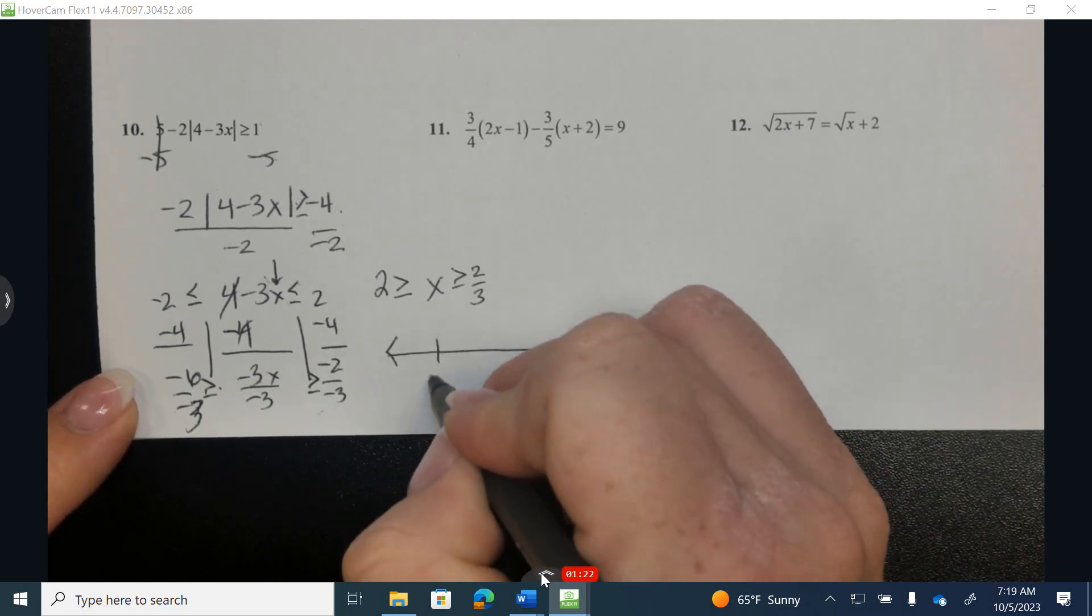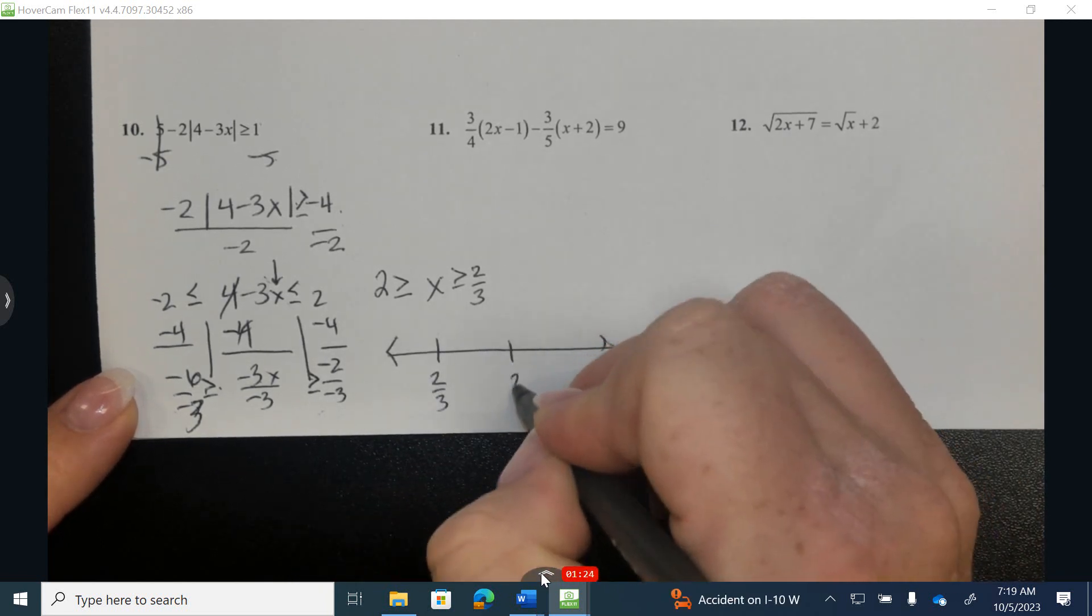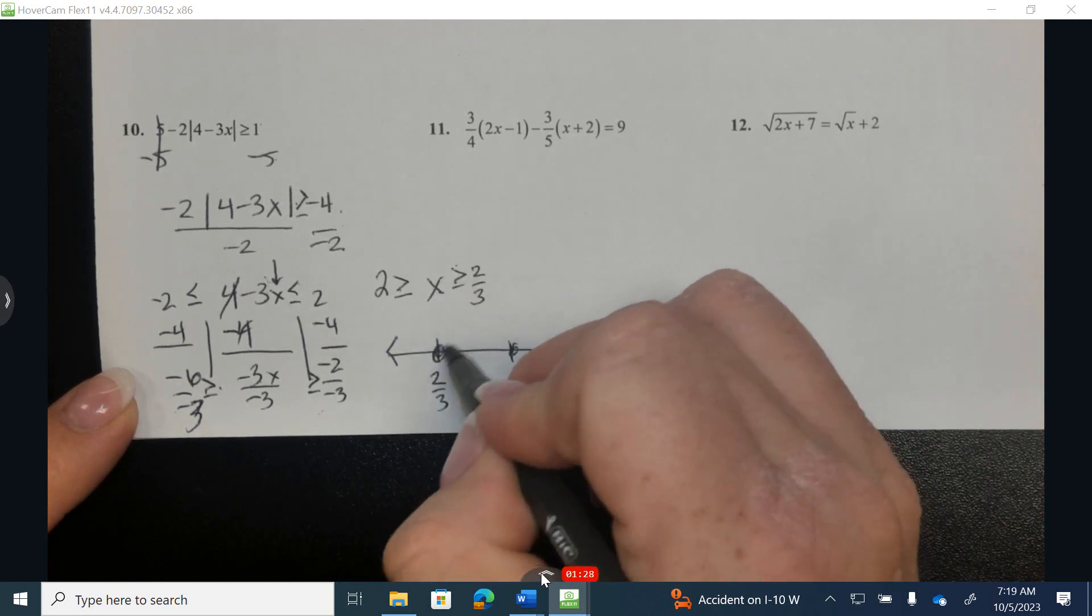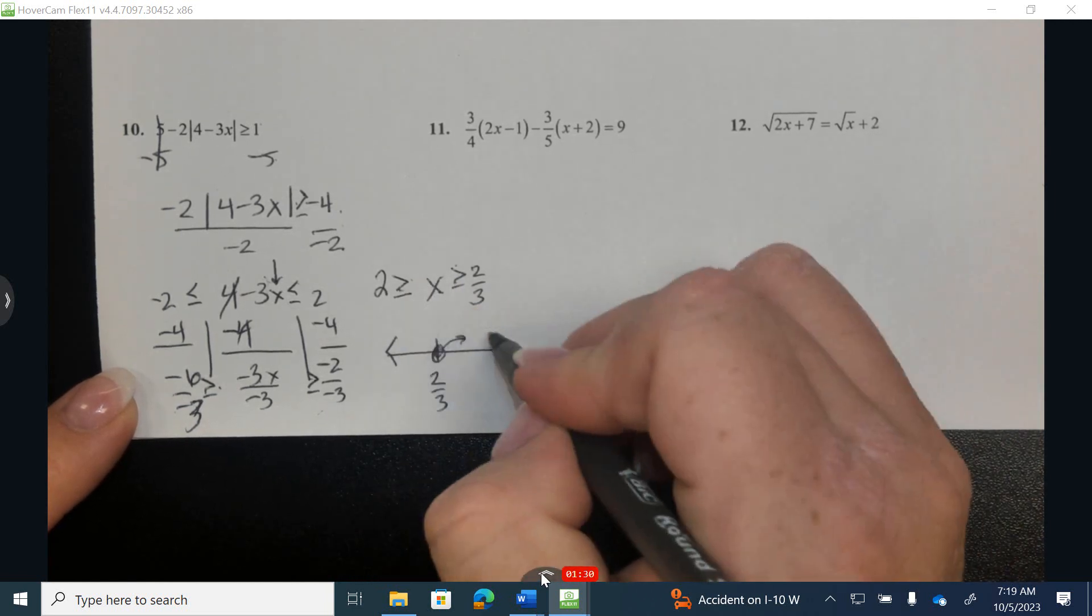Smaller number first, lower one second. X has to be greater than 2/3 and less than 2.